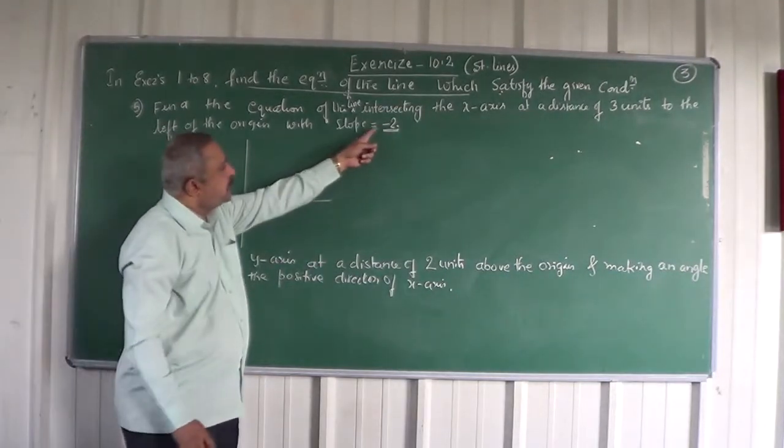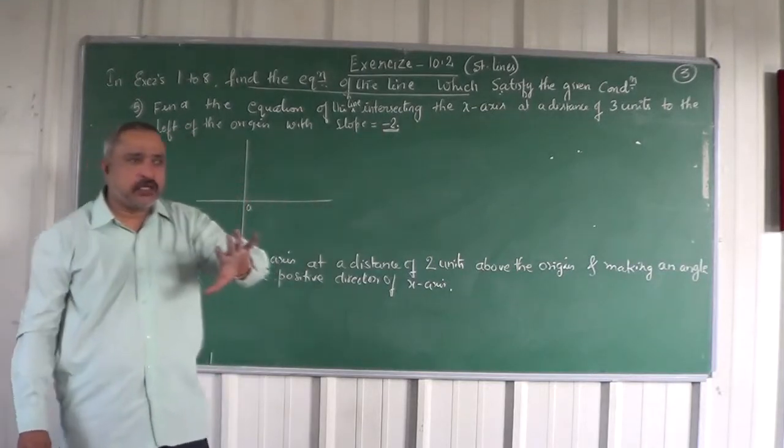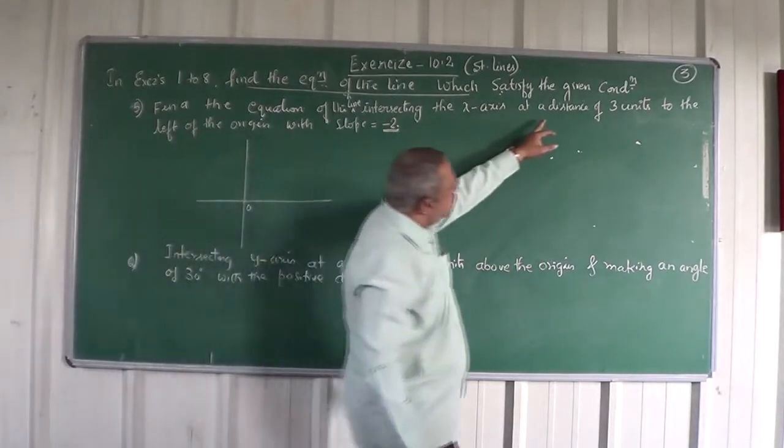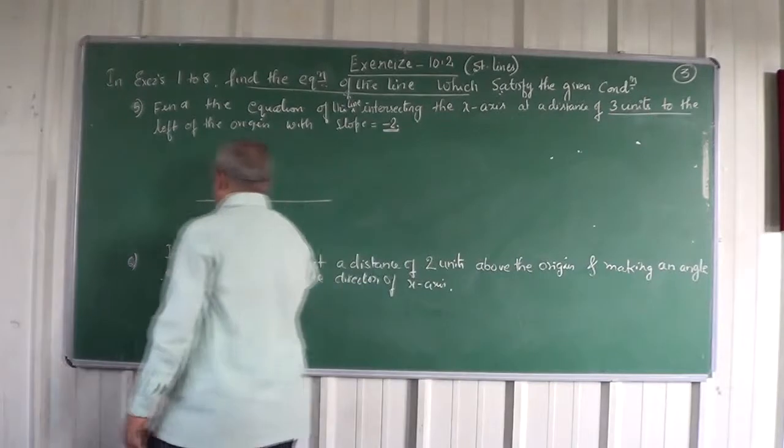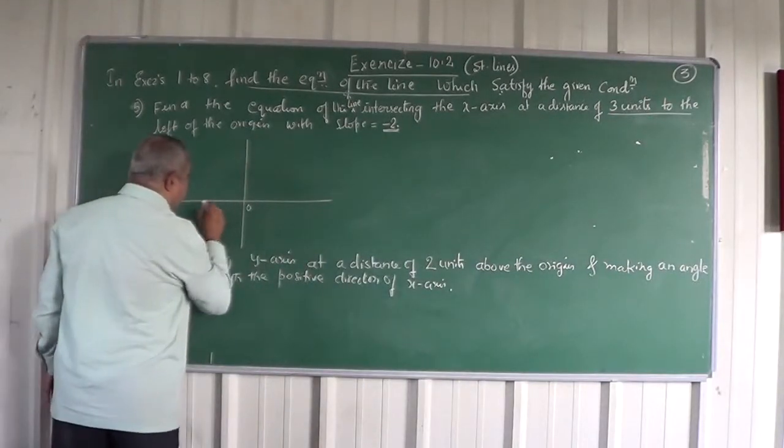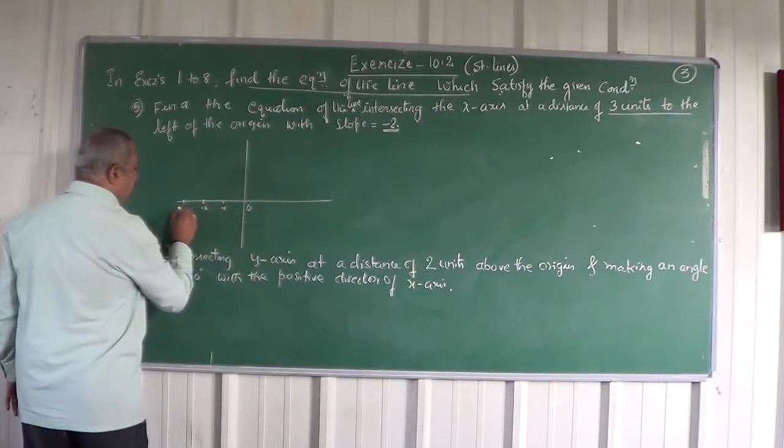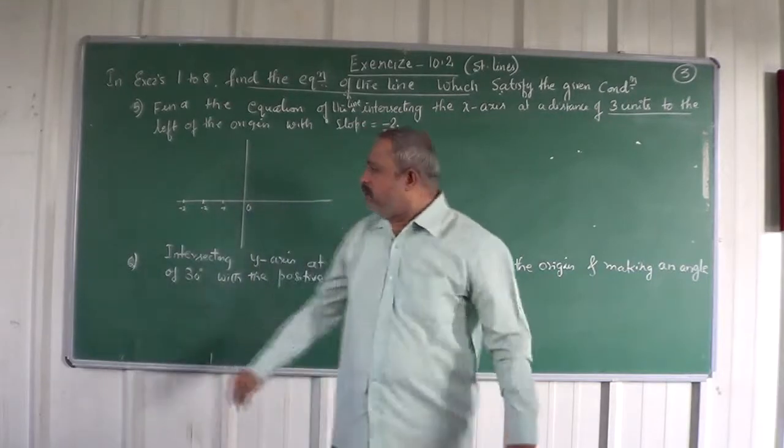And its slope is negative here, so tan theta is obtuse. How much distance? 3 units to the left. So come 3 units to the left of the x-axis. This is 1st, 2nd, 3rd. So this is minus 1, minus 2, minus 3. Why minus? Because I am to the left side of the origin.